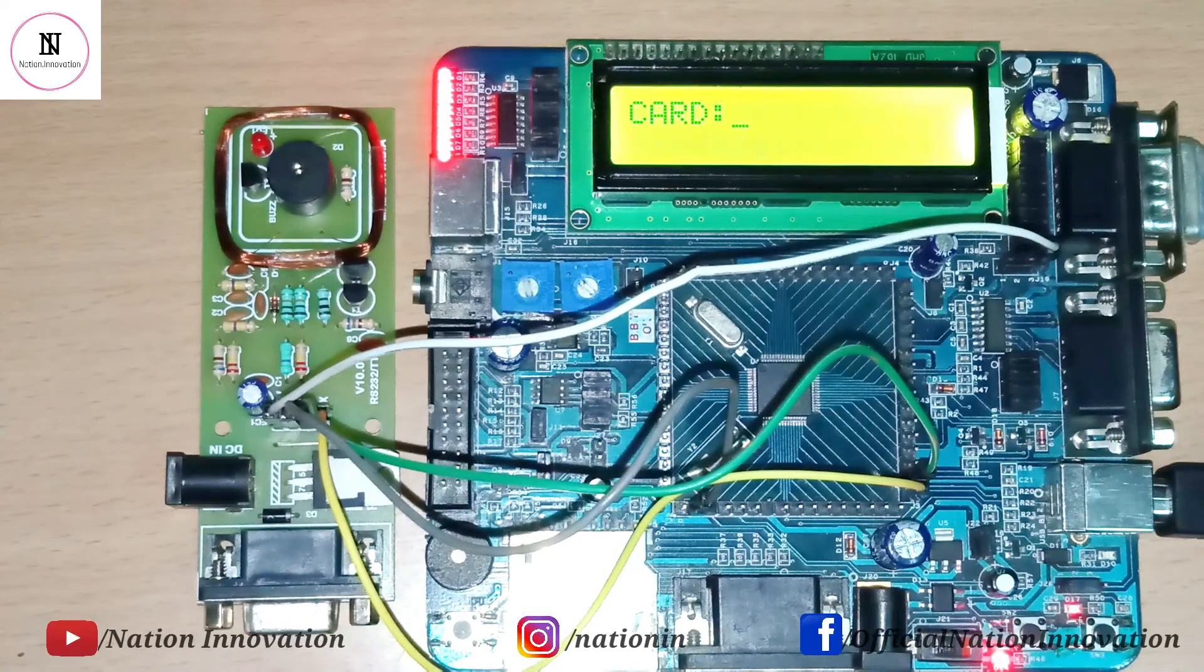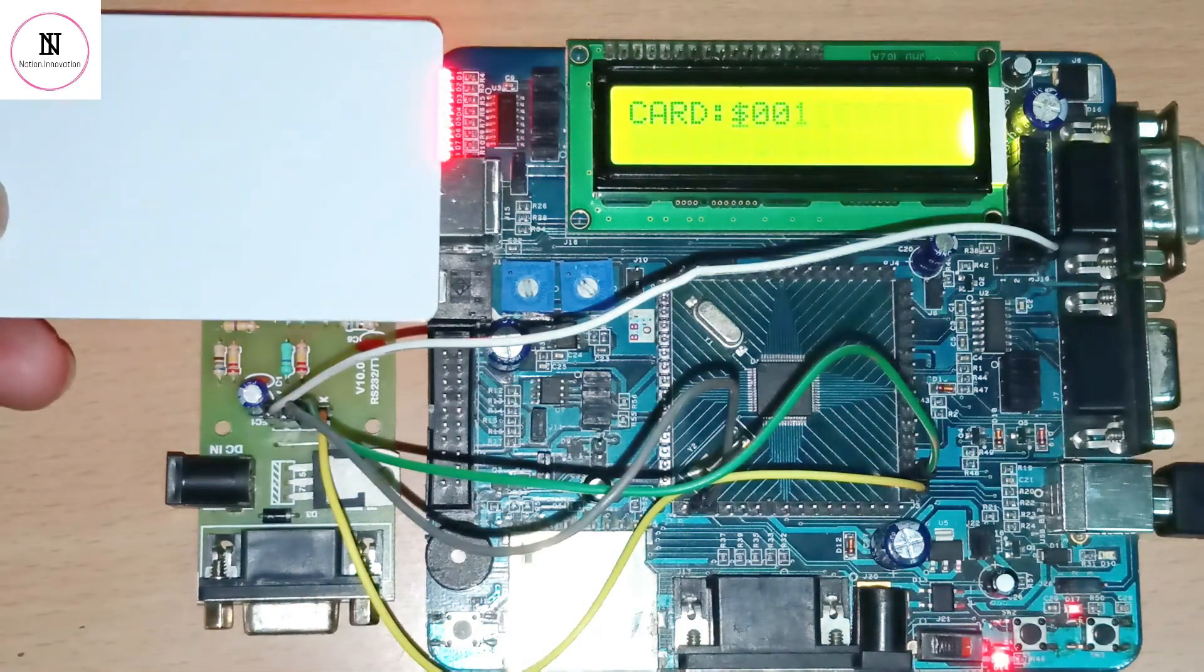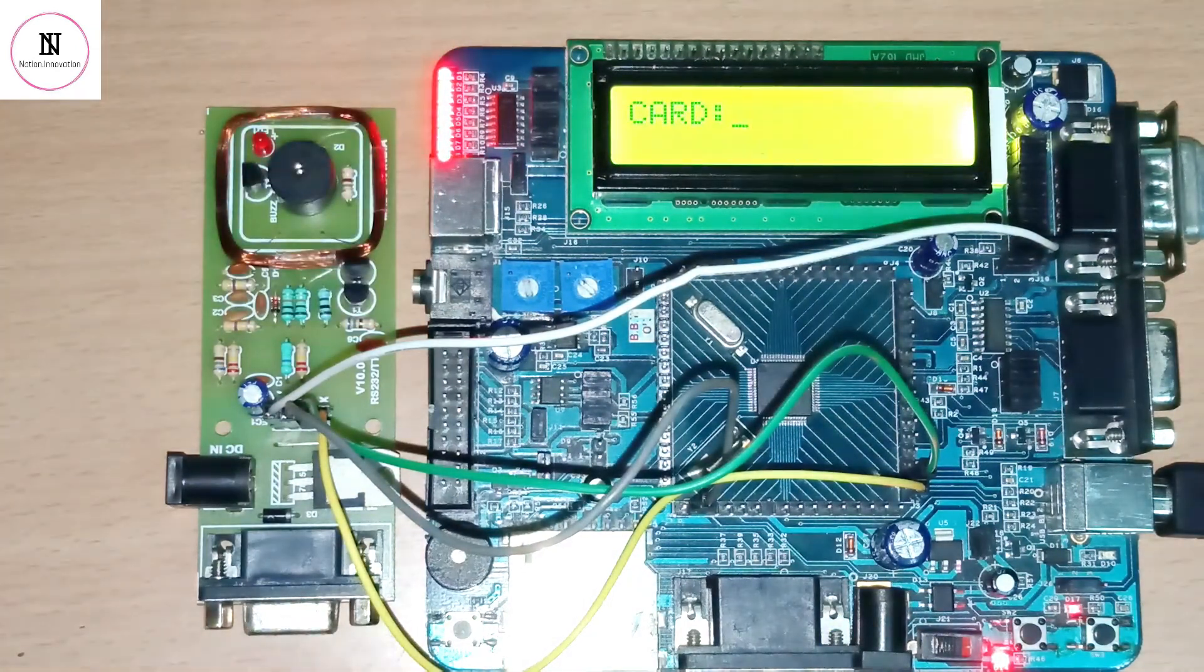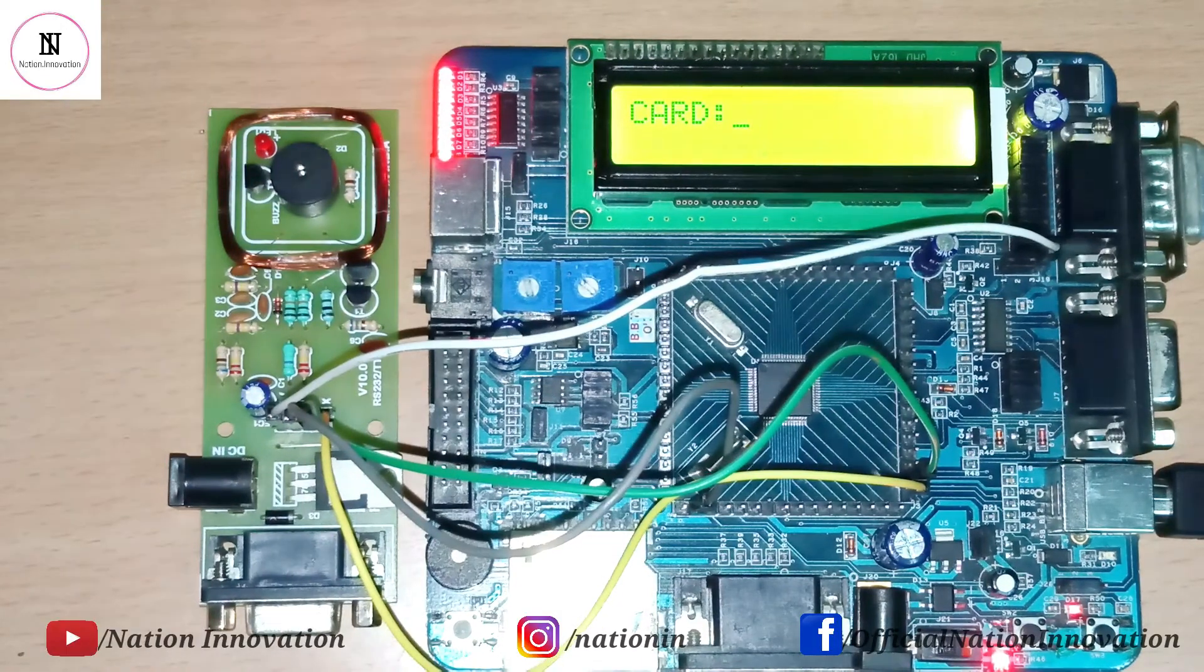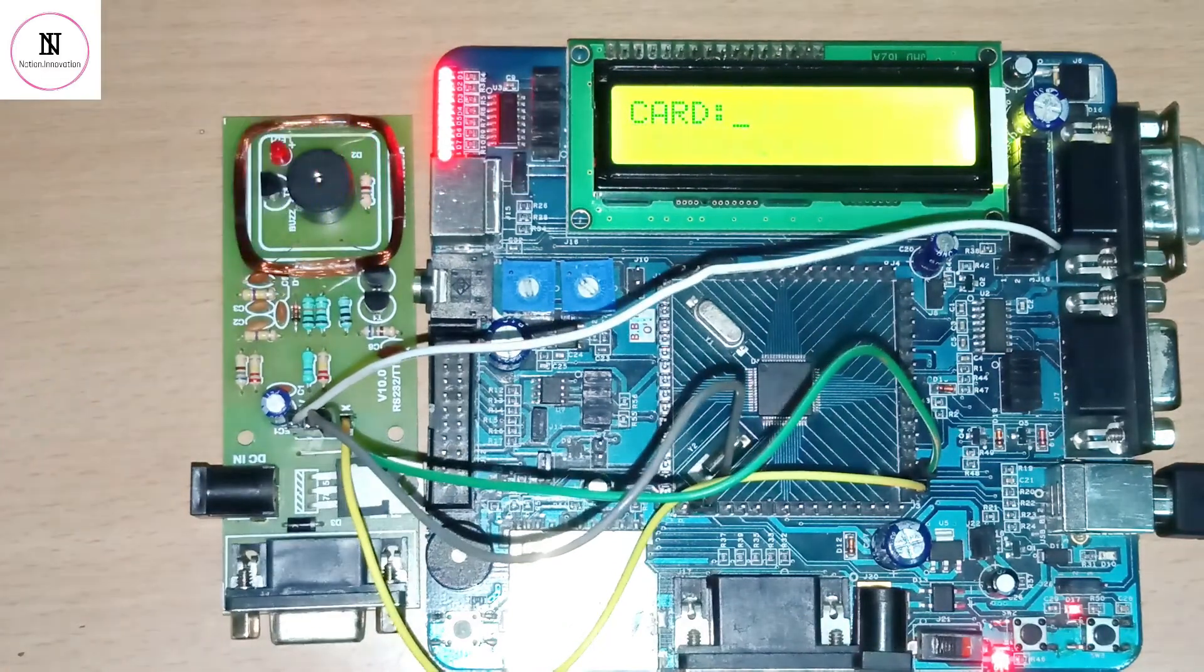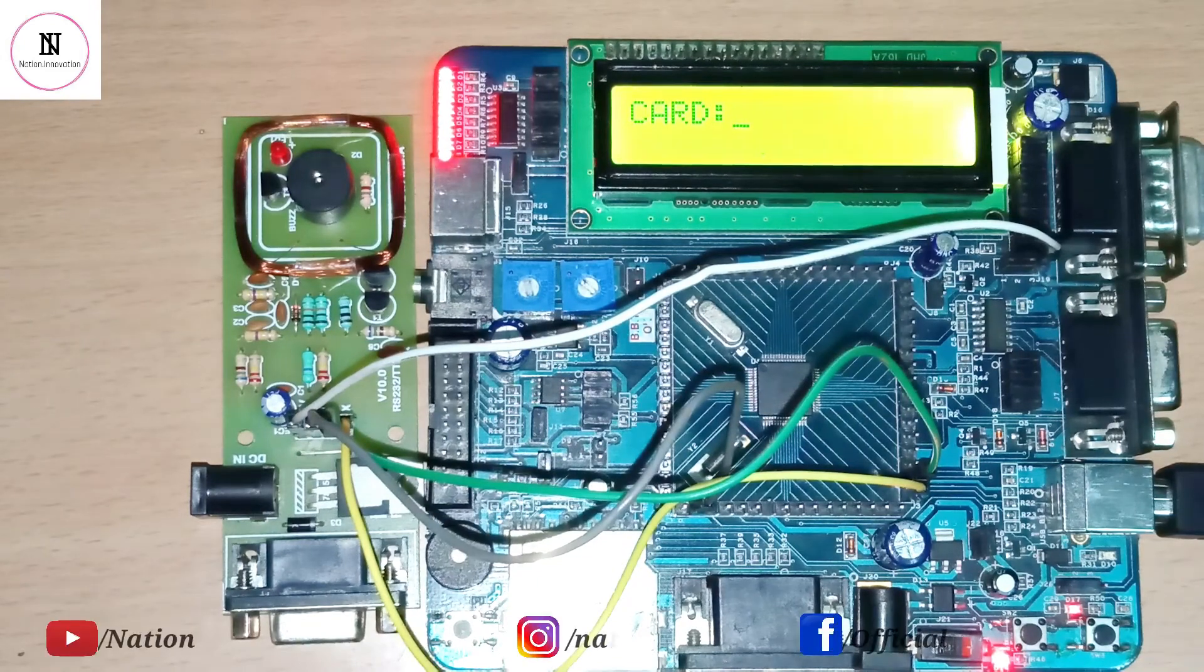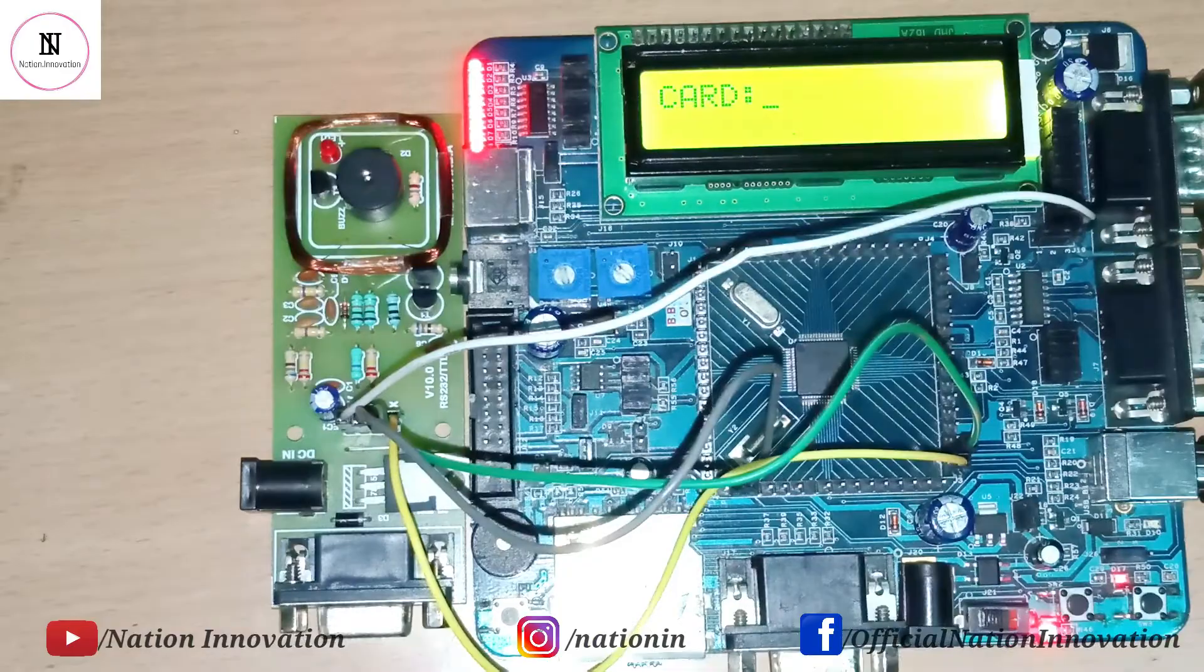When we put a wrong card near the RFID, it displays 'Invalid Card.' We are again putting an invalid card—see, it shows invalid. Now let's check another card. This is the valid card—see, it displays 'Valid Card.' Thank you very much.